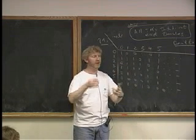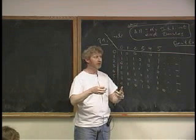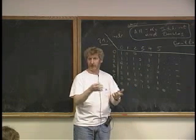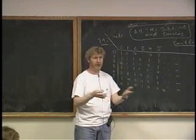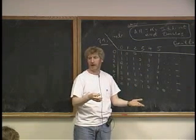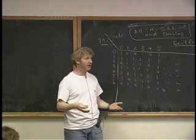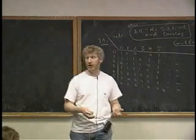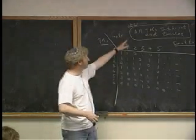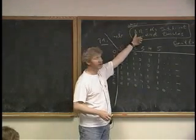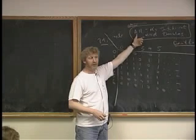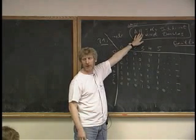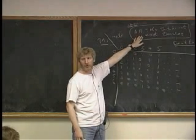The set of things where the machine accepts the string — you can just simulate it. If it accepts, sooner or later you'll get the answer yes. So you can get the answer yes when the answer is yes; you just won't get the answer no when the answer is no. But for the complement, where you switch things around, you can't even say yes. This one is not recursively enumerable.